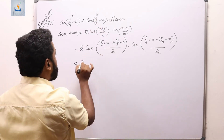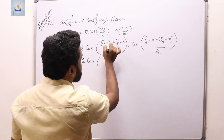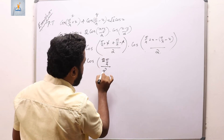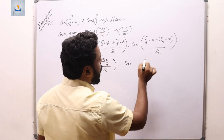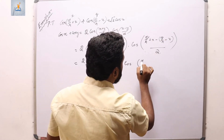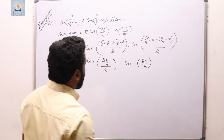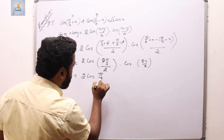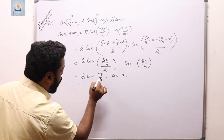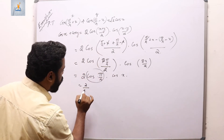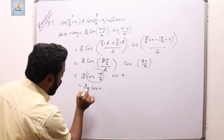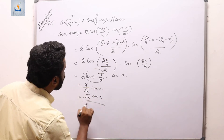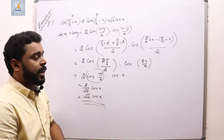Simplifying: in the first cosine, x cancels leaving 2·(π/4)/2 = π/4. In the second cosine, π/4 cancels leaving 2x/2 = x. So we get 2·cos(π/4)·cos(x). Since cos(π/4) = 1/√2, this becomes 2/√2·cos(x) = √2·cos(x), which equals the RHS. Hence the result is proved.